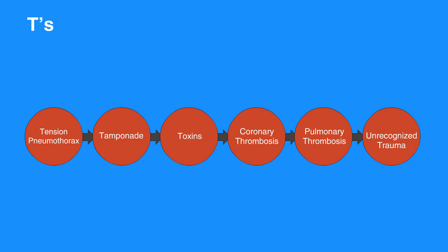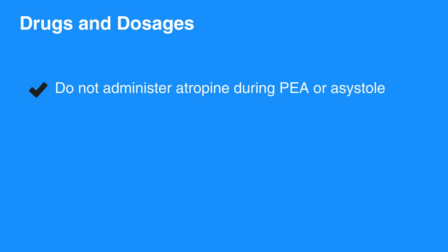Do not administer atropine during PEA or asystole. Although there is no evidence that atropine has a detrimental effect during bradycardic or asystolic cardiac arrest, routine use of atropine during PEA or asystole has not been shown to have a therapeutic benefit.